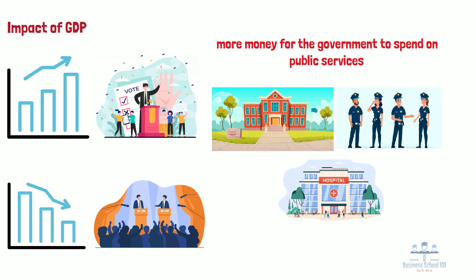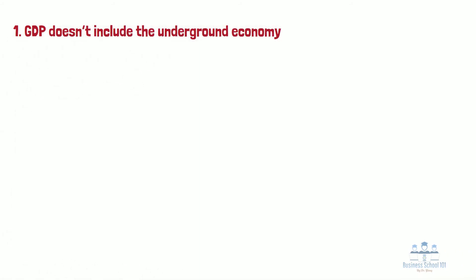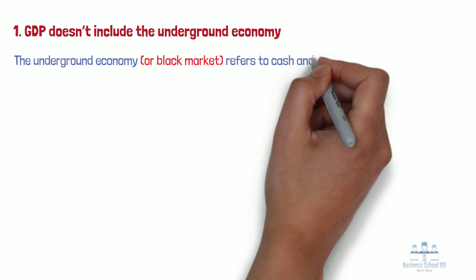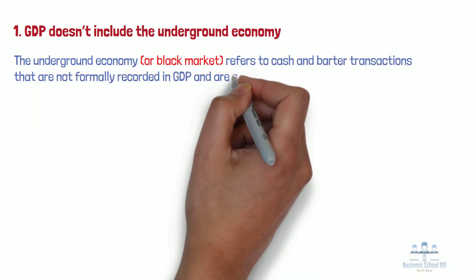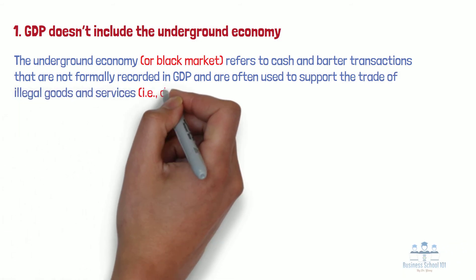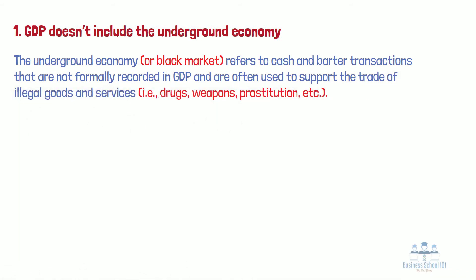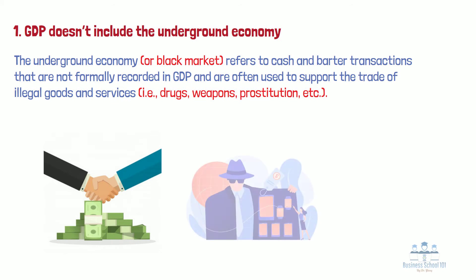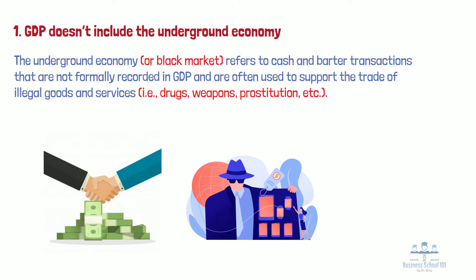Although GDP is one of the most widely used tools to measure a country's economy, it doesn't tell the whole story. That's why we're going to learn about some of the major drawbacks of GDP. First, GDP doesn't include the underground economy. The underground economy refers to cash and barter transactions that are not formally recorded in GDP and are often used to support the trade of illegal goods and services. The scale of underground economies varies greatly between nations and, in some cases, they make up a substantial percentage of a country's economic output. The underground market is almost impossible to estimate or value and, due to its illegal nature, it is rarely incorporated into a nation's published GDP figure. Therefore, some nations' economic outputs may be understated by GDP.